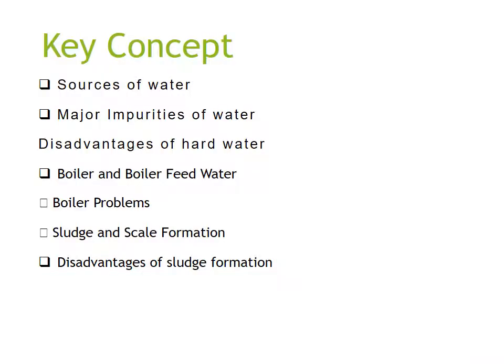Key concepts: the following concepts will be covered in this lecture. First of all we will discuss major sources of water, then major impurities present in water, disadvantages of hard water, what is a boiler and what is boiler feed water, what are boiler problems, formation of sludge and scale, and then disadvantages of sludge and scale formation. All these concepts will be discussed in detail.